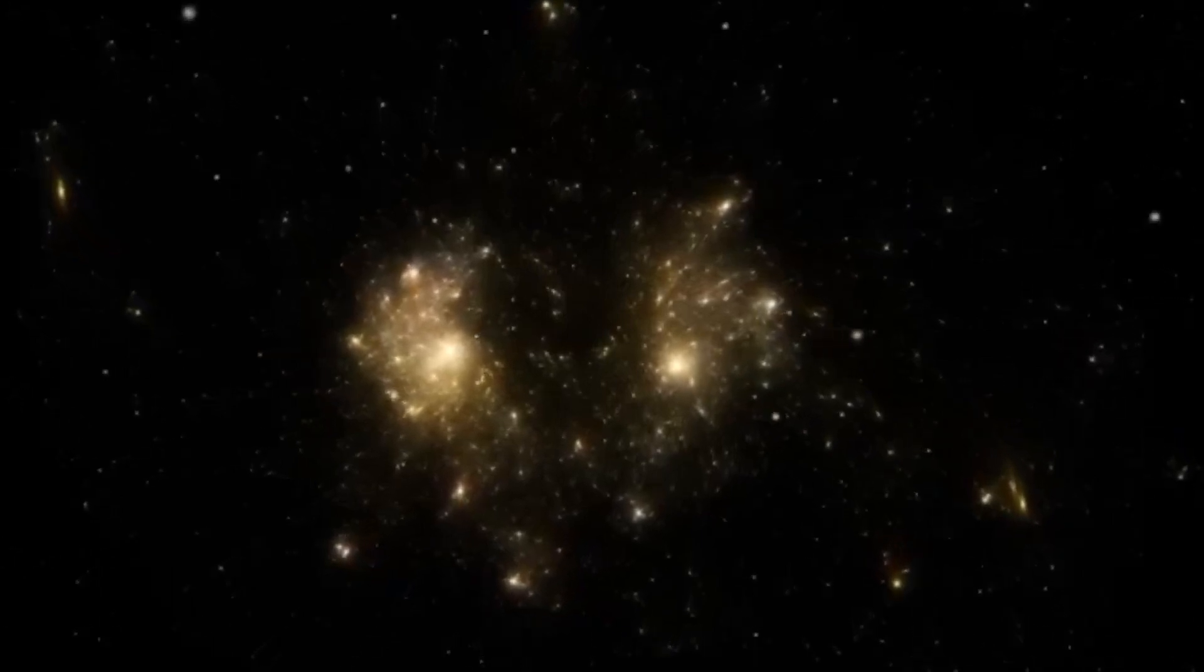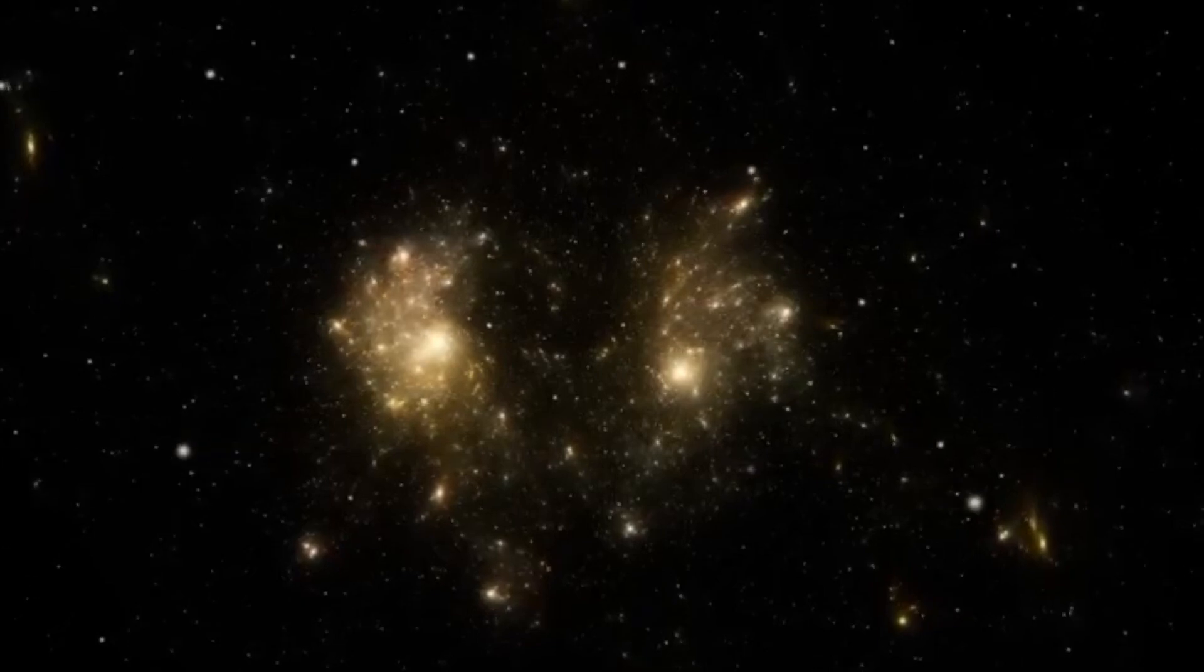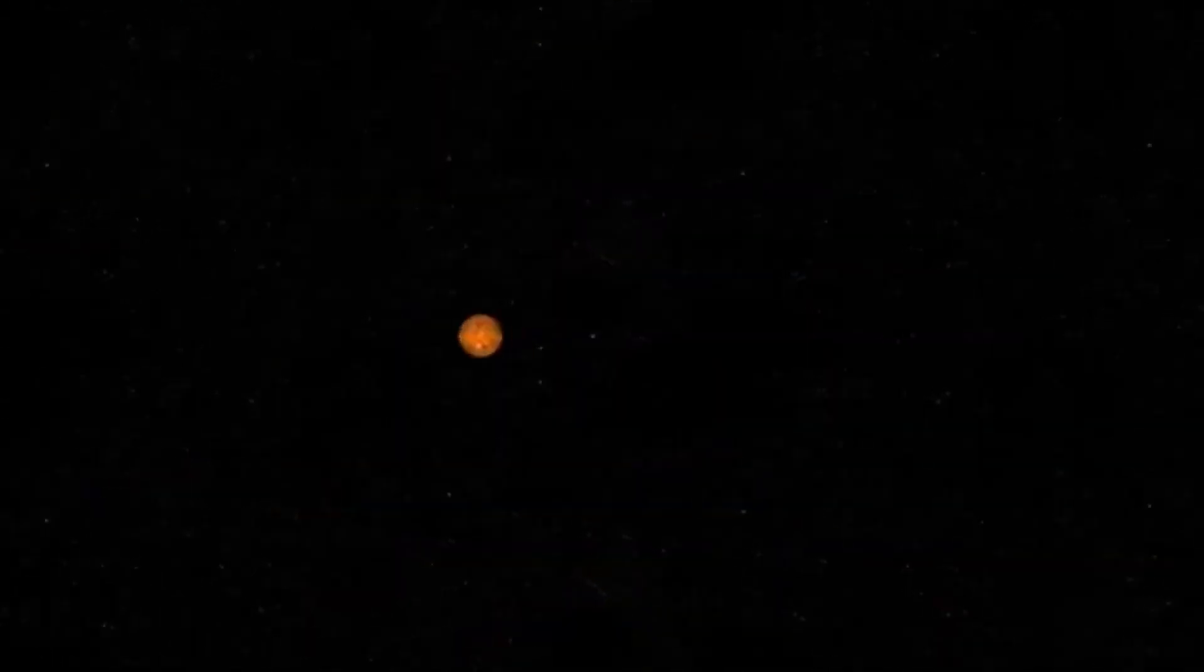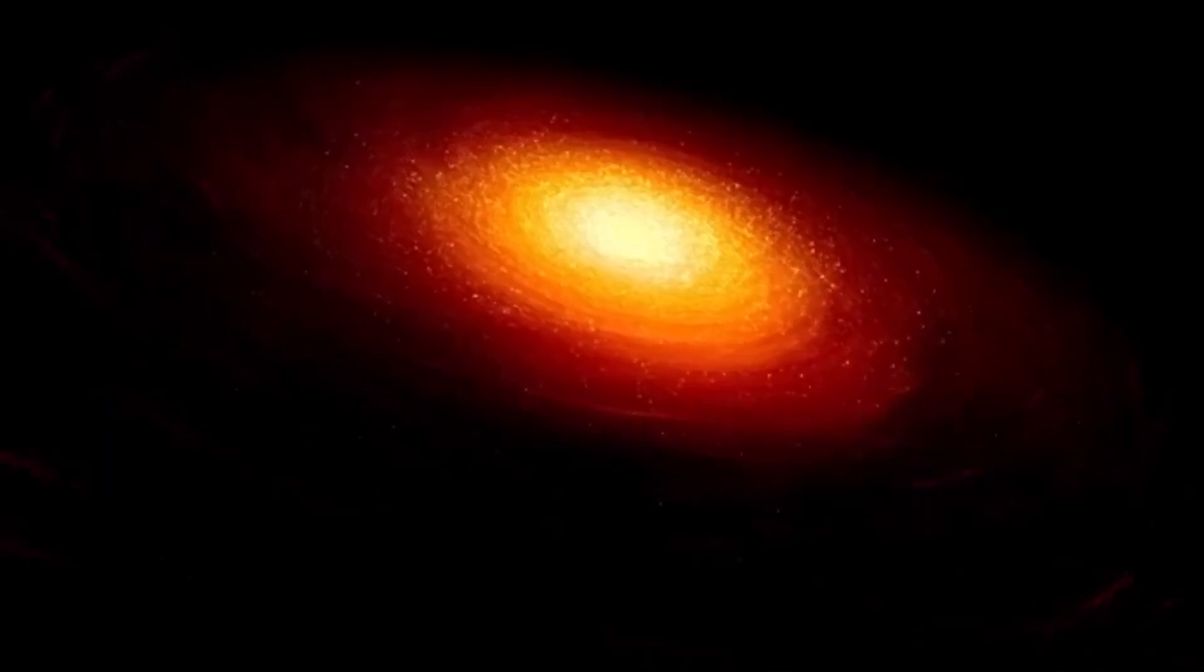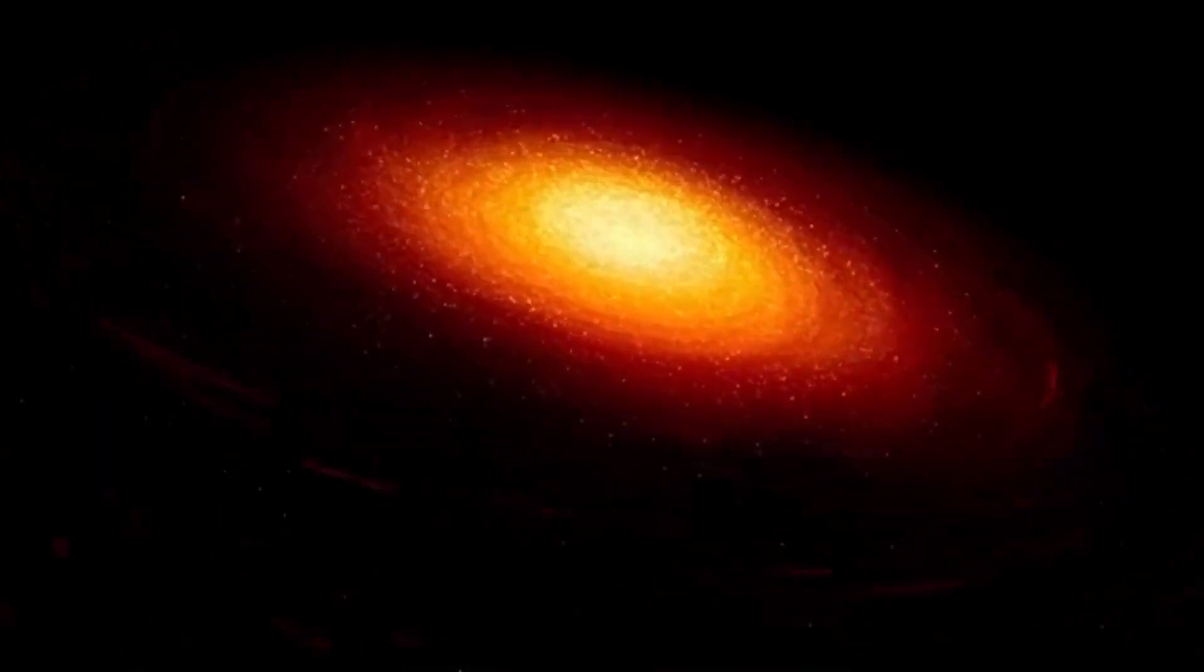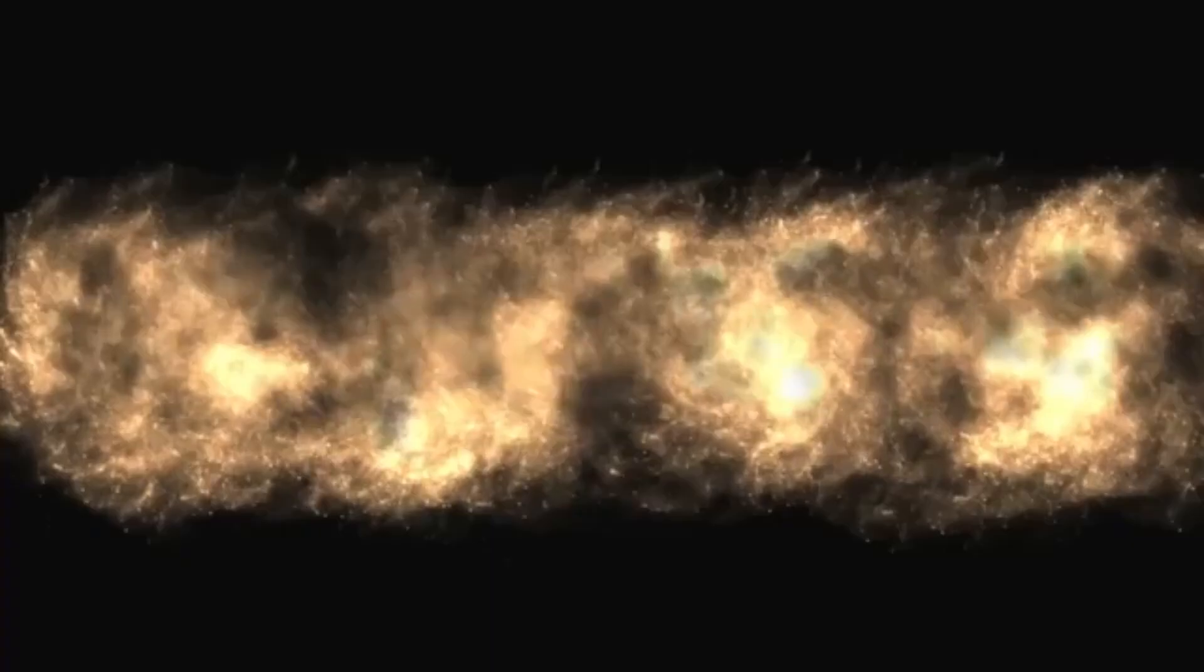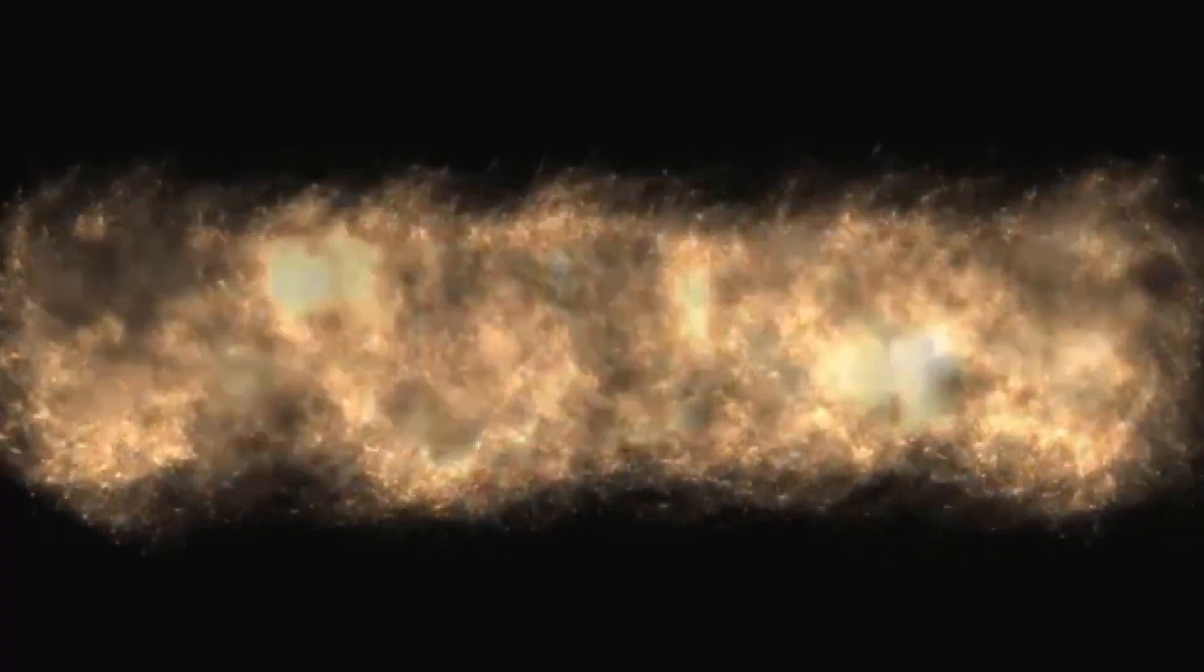Binding the universe together are cosmic filaments, enormous threads of gas, dust, and dark matter that stretch across billions of light-years. These filaments form a web-like structure that links galaxies and clusters into an intricate cosmic network. The universe's matter is not evenly distributed. Instead, it forms this delicate web of filaments and nodes where gravity gathers galaxies together.